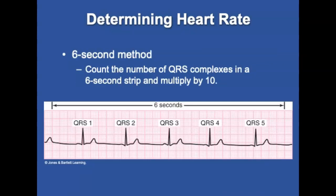When you determine the heart rate, use the six-second method. The strip on screen is a six-second strip. The fastest method for measuring a heart rate is from the ECG on a six-second strip. Count the number of QRS complexes in a six-second strip, then multiply by 10 to obtain the heart rate. On this strip you see five complexes, so multiplying by 10 gives a heart rate of 50.